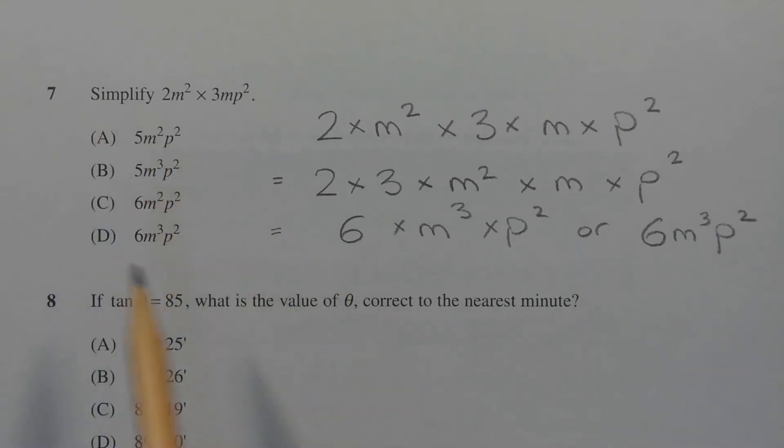So this expression simplifies to 6 times m cubed times p squared, or in shorthand it's 6m cubed p squared. Therefore, the answer is option D.